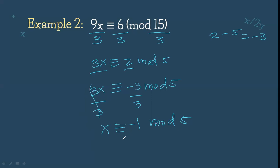x is congruent to negative 1 mod 5. But modulo is remainder, and there is no negative remainder. So we need to add this. Negative 1 plus 5 gives us 4. This is also congruent to 4 mod 5. That will be our answer.